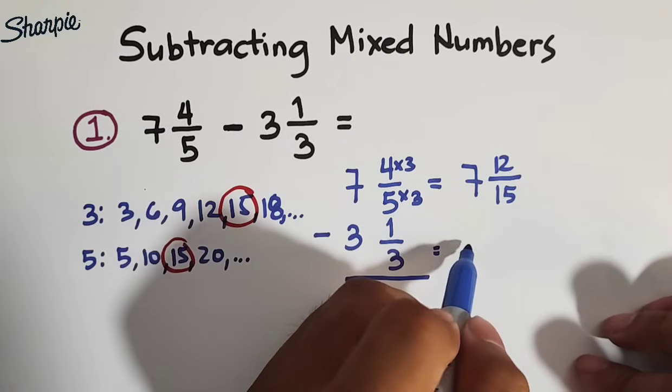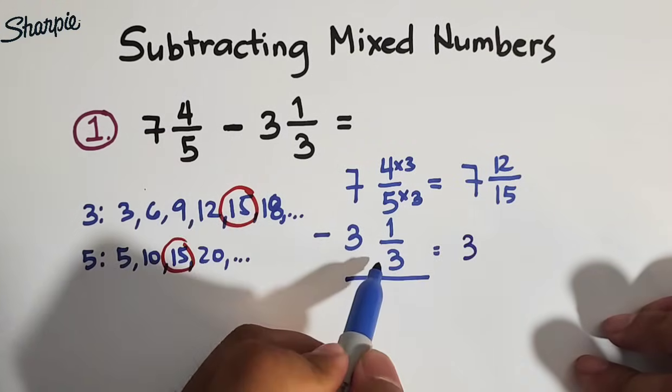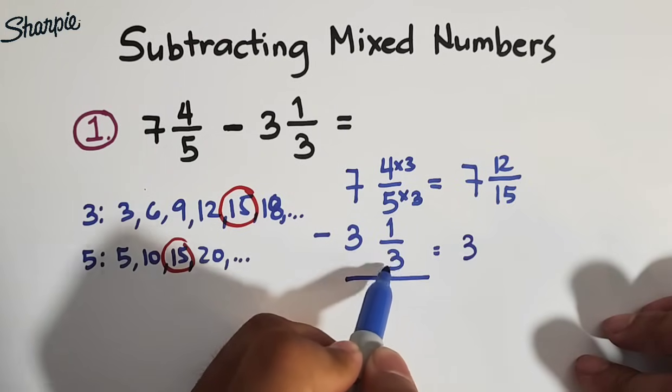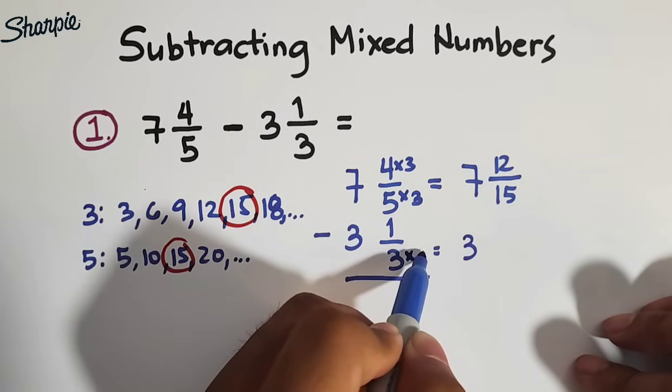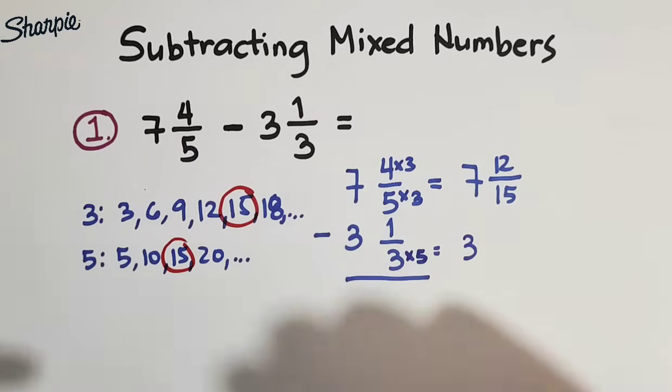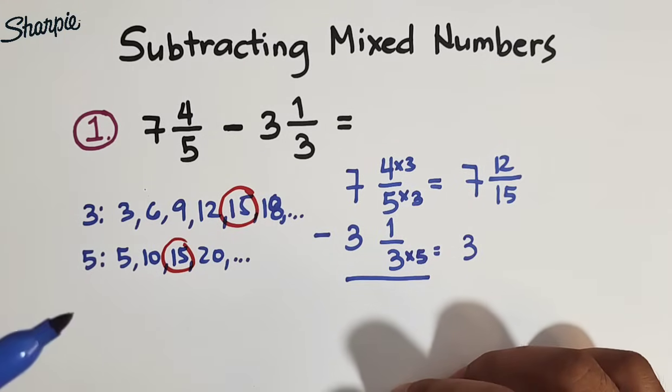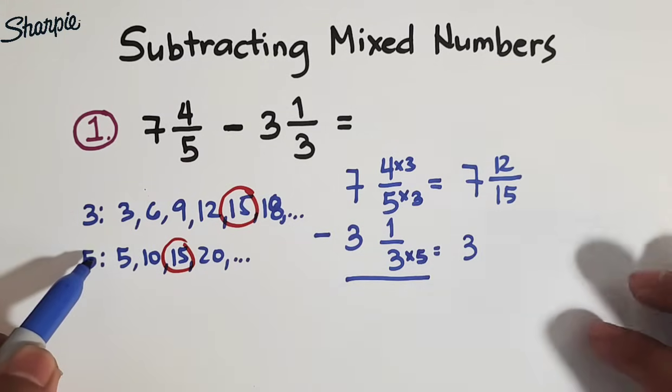And for this mixed number, we need to copy 3. And then, to make this 15, yung 3 natin, we will multiply it by 5. Again, bakit natin kailangan gawing 15 yung 3 and 5? Because iyon yung kanilang least common denominator. At iyon yung lumabas na kanilang least common multiple.